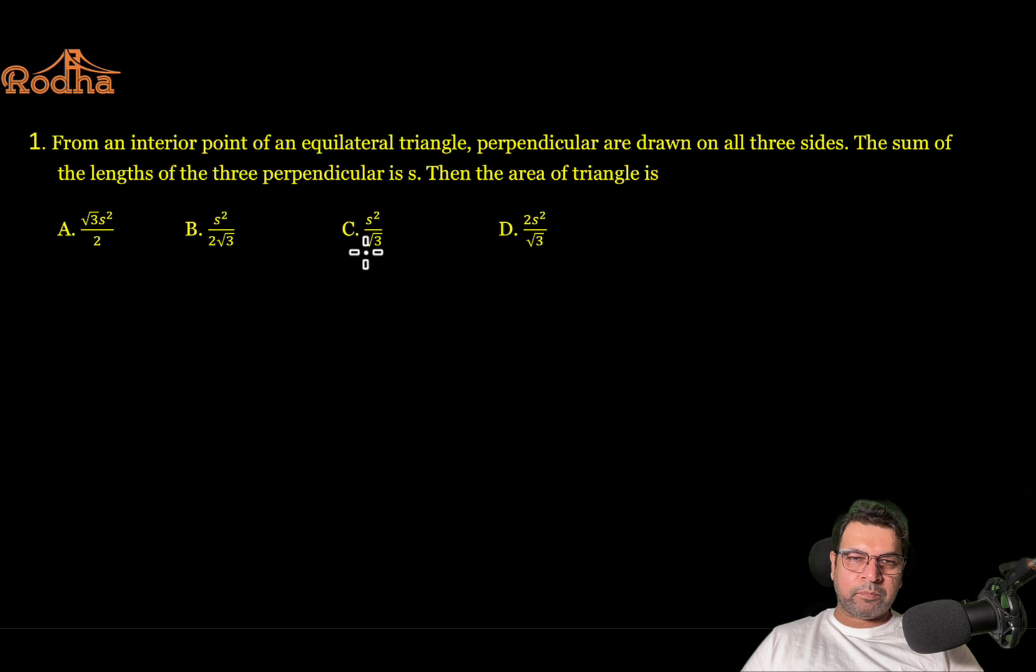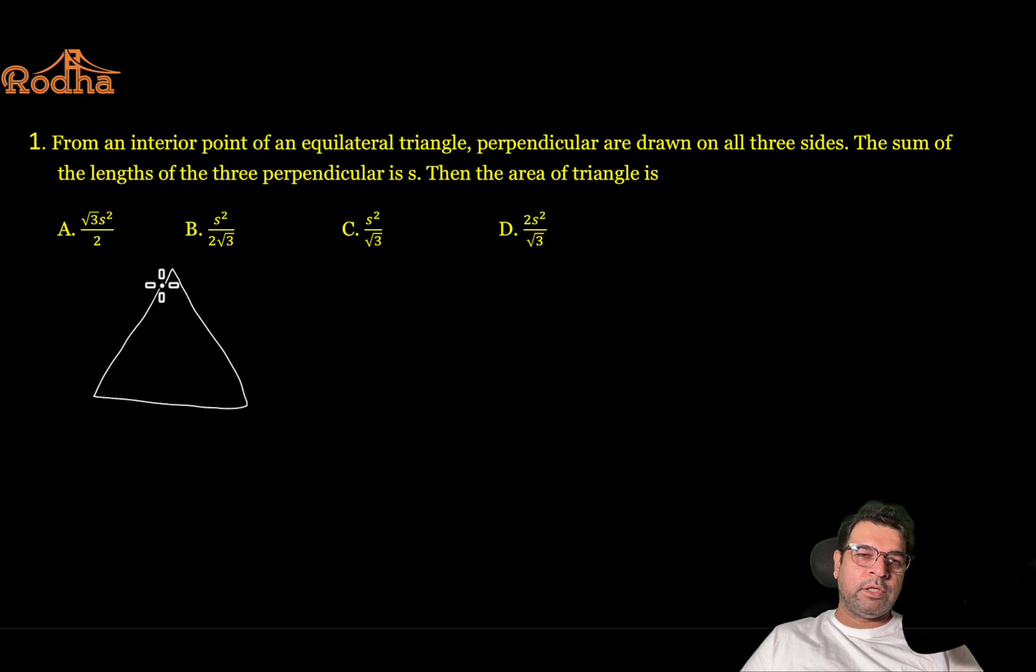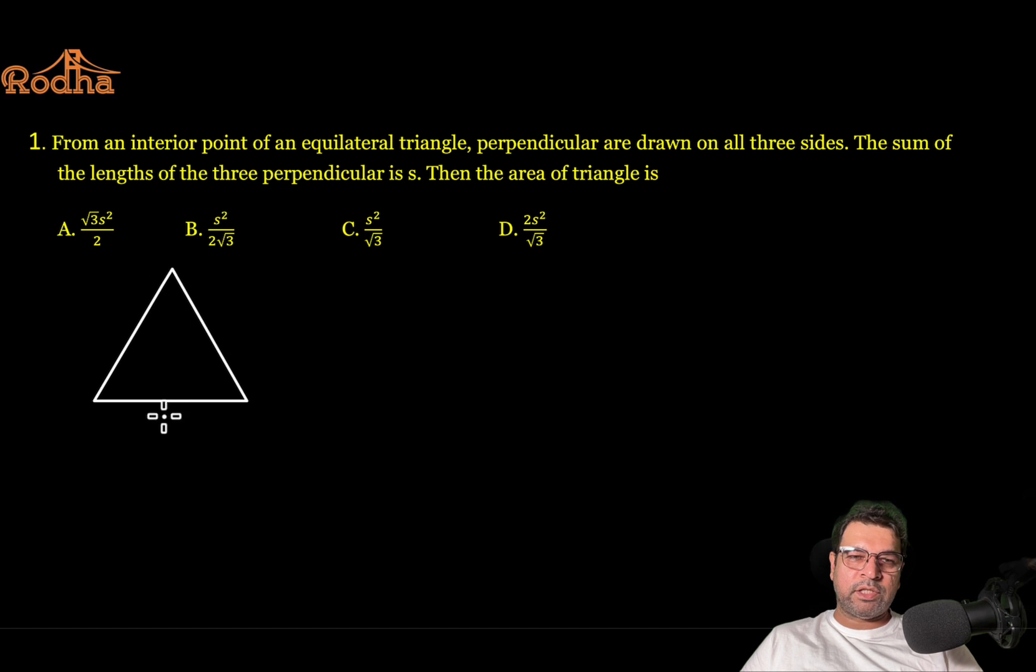So what is the trick here? If the answer is in terms of S and you do not have any option which says cannot be determined, that means that point can be anywhere. If the point can be anywhere and still the answer is same, that means I can assume the point anywhere, which is the easiest one. In an equilateral triangle, what is the easiest point we can take?